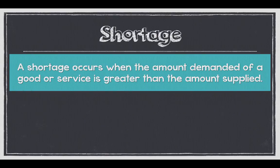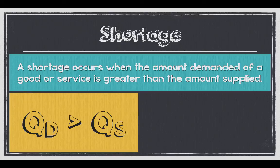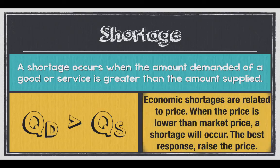Shortage is our first one today. A shortage occurs when the amount demanded of a good or service is greater than the amount supplied — quantity demanded is greater than quantity supplied. Economic shortages are basically related to price. When the price of a market is lower than the market price, a shortage will occur. If it's higher, we'll have what's known as a surplus.